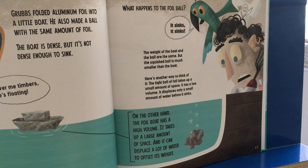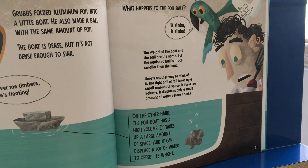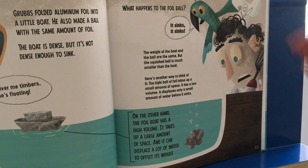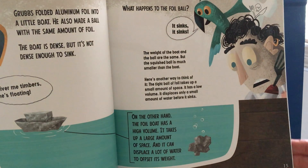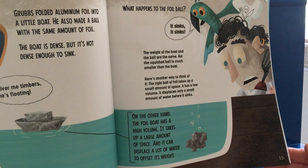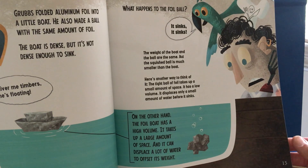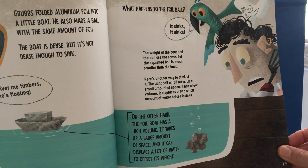Here's another way to think of it. The tight ball of foil takes up a small amount of space — it has a low volume. It displaces only a small amount of water before it sinks. On the other hand, the foil boat has high volume. It takes up a large amount of space and can displace a lot of water to offset its weight.